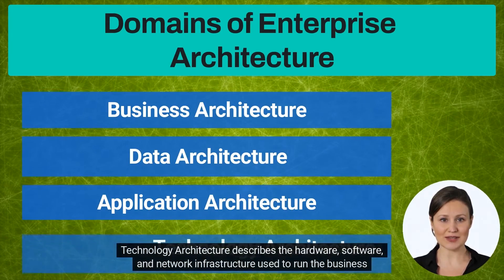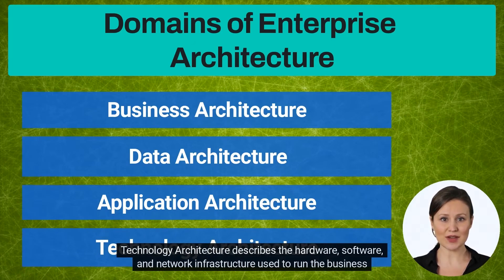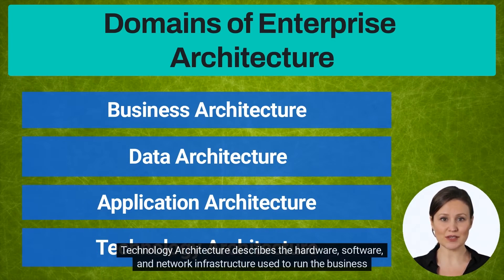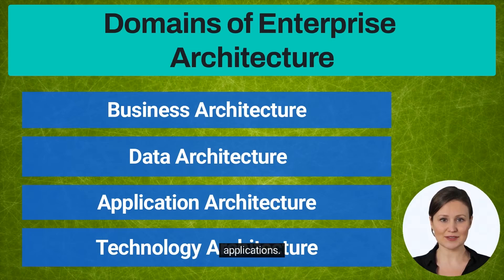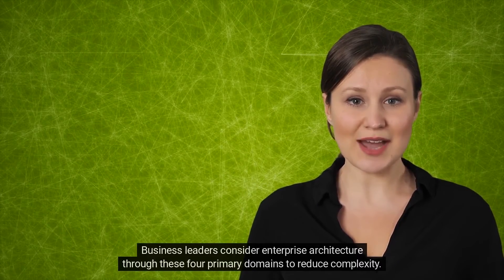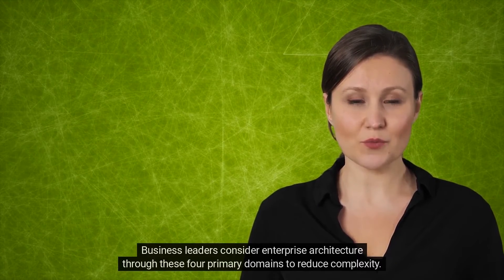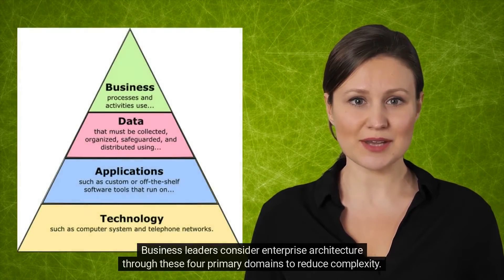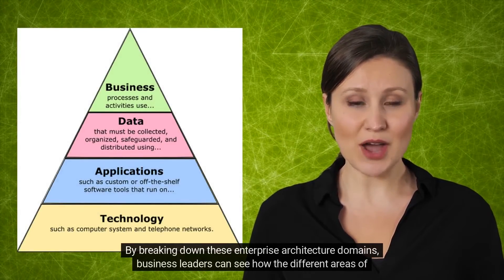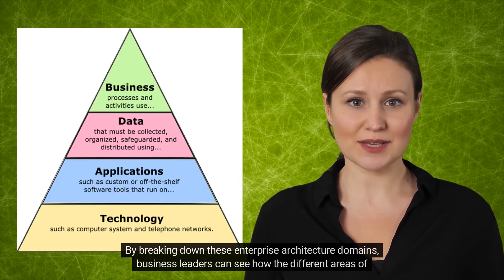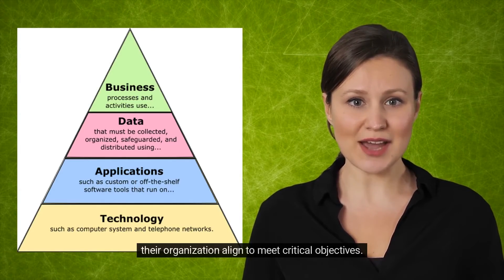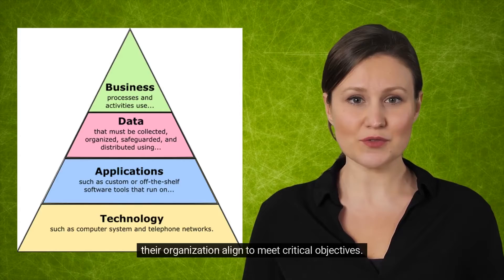Technology architecture describes the hardware, software, and network infrastructure used to run the business applications. Business leaders consider enterprise architecture through these four primary domains to reduce complexity. By breaking down these enterprise architecture domains, business leaders can see how the different areas of their organization align to meet critical objectives.